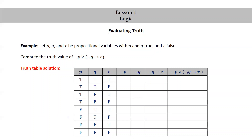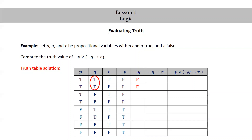To get the truth values for the column corresponding to not p, we take the opposite truth values from the column corresponding to p. So the 4 T's become 4 F's and the 4 F's become 4 T's. We do something similar for the column corresponding to not q: the TT becomes FF, FF becomes TT, TT becomes FF, and FF becomes TT.